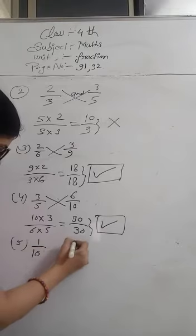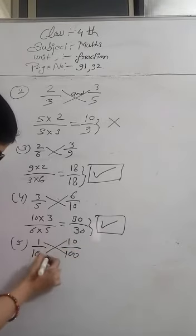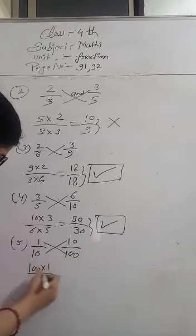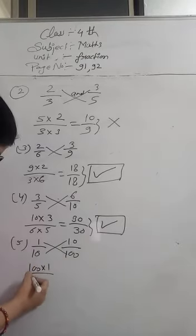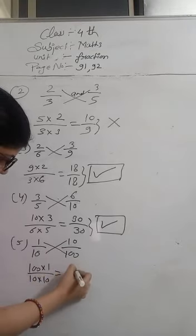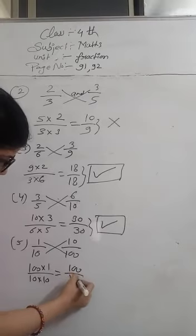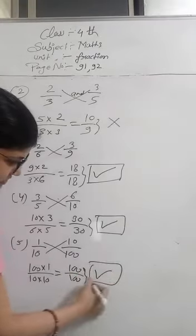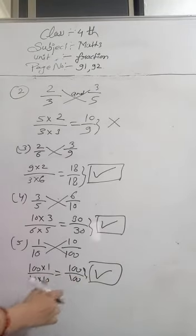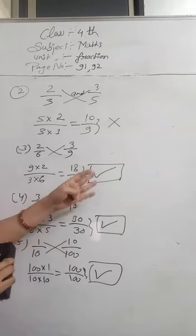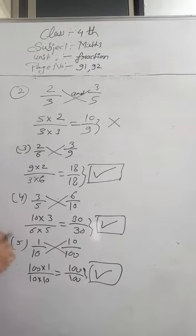Fifth one is 1 by 10 and 10 by 100. So 100 multiplied by 1 and 10 multiplied by 10. 100 ones are 100 and 10 tens are 100. So these are equal, so we will put a tick sign here. You can write these ticks in your book.